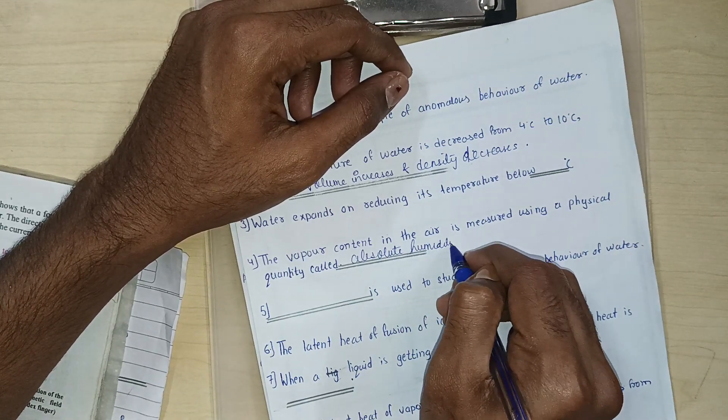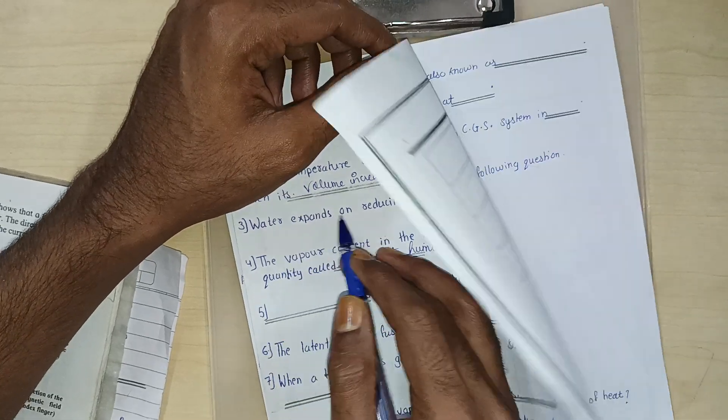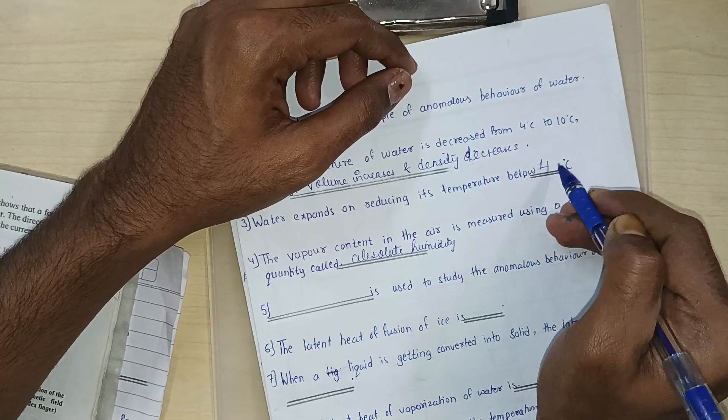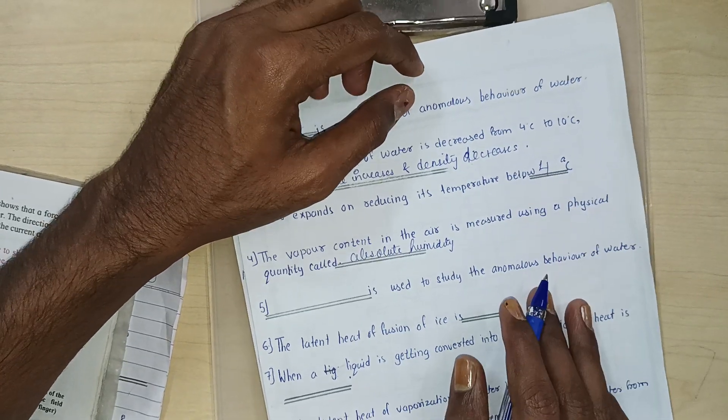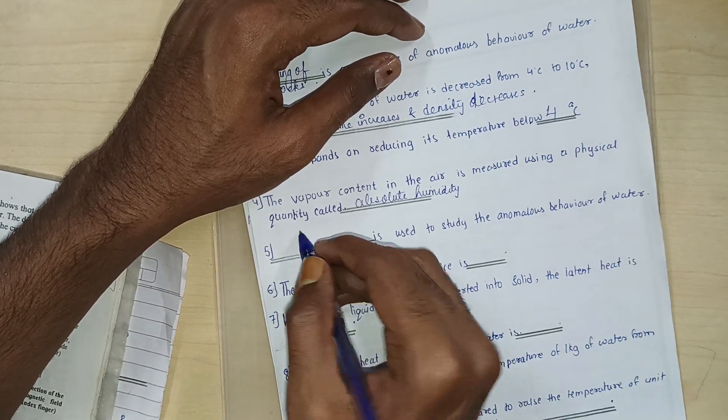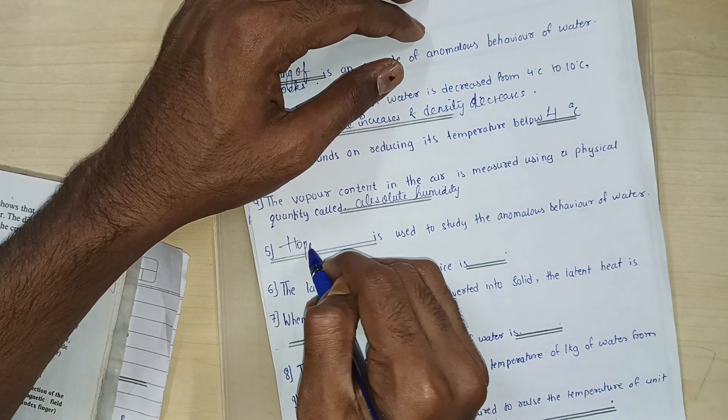Water expands on reducing its temperature below how many degrees Celsius? Four degrees Celsius. Anomalous behavior. Now dash is used to study the anomalous behavior of water. Hope's apparatus.